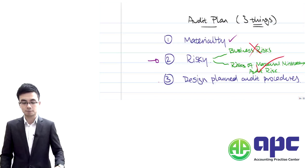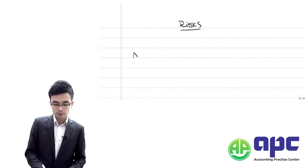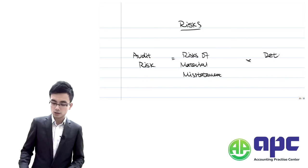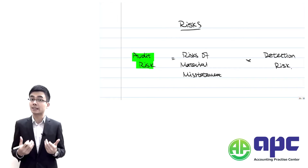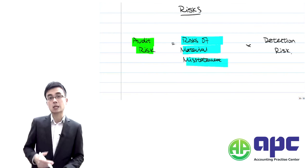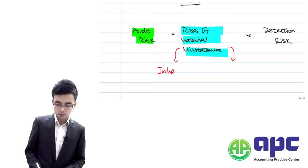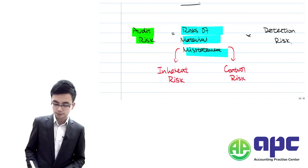Regarding risk, let me remind you: audit risk equals the risk of material misstatement times the detection risk. Audit risk is the risk that the auditor may give a wrong audit opinion. This happens because the financial statements may be materially misstated — and that risk of material misstatement has two components: inherent risk and control risk.